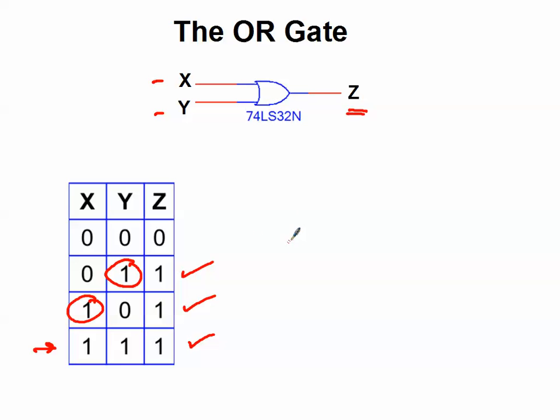Now the way we'd write the logic expression for this, Z equals X or Y. Notice it's a plus sign, but that's how we represent OR in digital logic expressions.